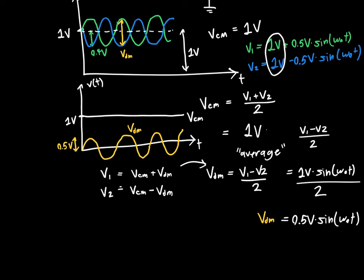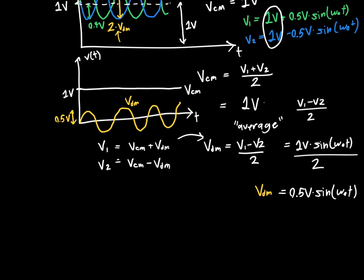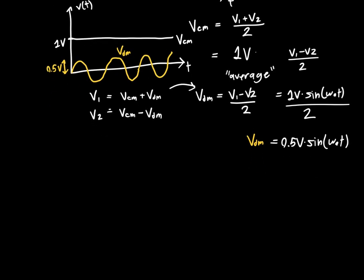Note: there's a small mistake in the diagram above — that voltage should be labeled 2·VDM; everything else in the explanation is correct. To summarize so far: the common mode voltage is the signal common between v1 and v2, and the differential mode voltage is the difference between them, with a factor of one-half to make the math work out.